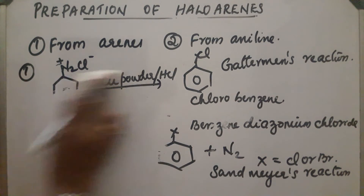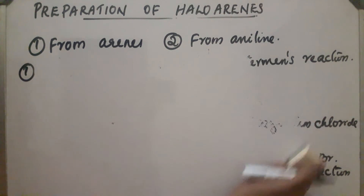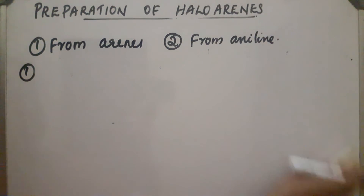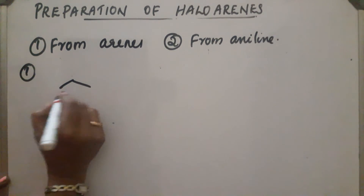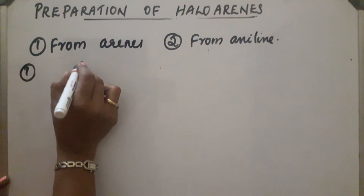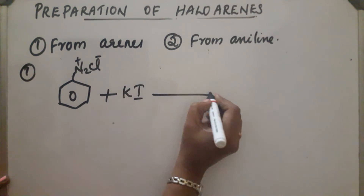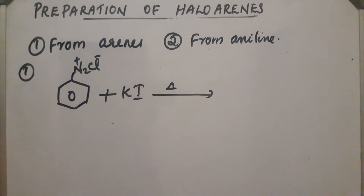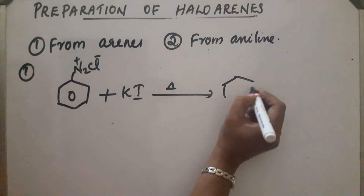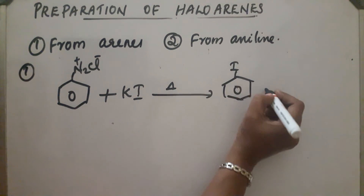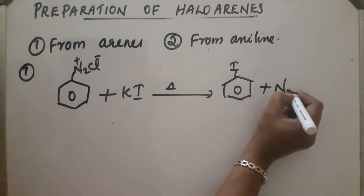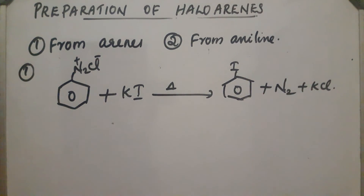In the case of iodobenzene, there is no need for copper halides. Instead, we use potassium iodide — either by shaking the compound or heating. Benzenediazonium chloride (N2⁺ Cl⁻) on reaction with potassium iodide gives iodobenzene plus N2.